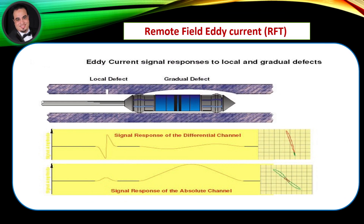Remote Field Testing (RFT) is commonly used for inspection of ferrous carbon steel tubes. RFT has equal sensitivity to inside diameter and outside diameter indications and can detect and size corrosion and pitting, as well as baffle cuts.